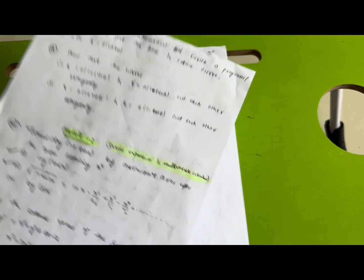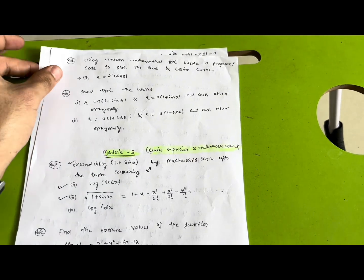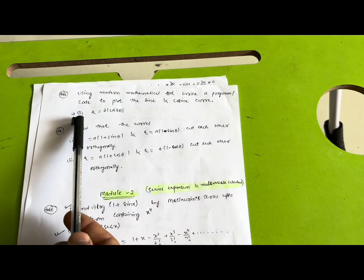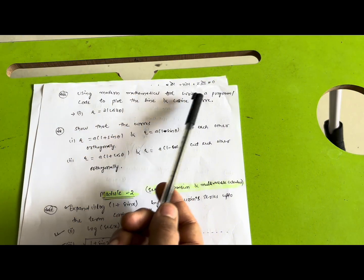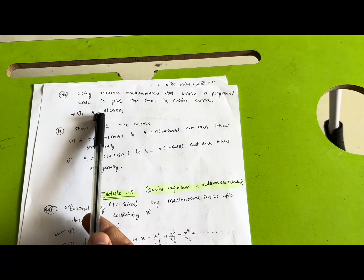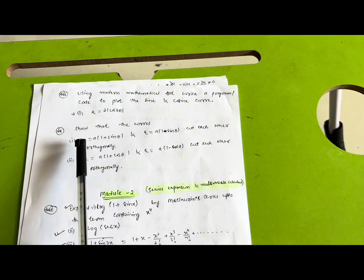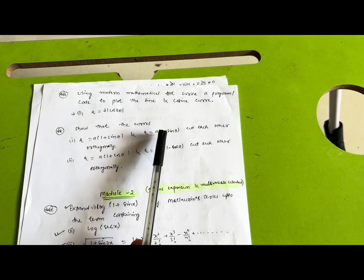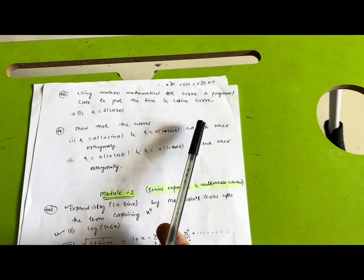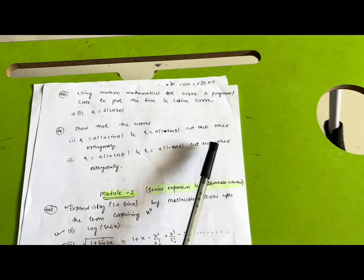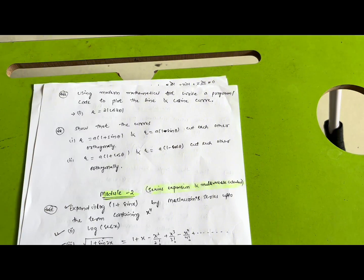Coming to other topics in Module 1 — using a modern mathematical tool, write a program or code to plot the sine and cosine curve. Second, use a modern mathematical tool to write a program/code to plot r = a cos(2θ). Next, show that the curves r = a(1 + sinθ) and r = a(1 − sinθ) cut each other orthogonally, and r = a(1 + cosθ) and r = a(1 − cosθ) cut each other orthogonally. Make sure you practice these super important questions with utmost priority.